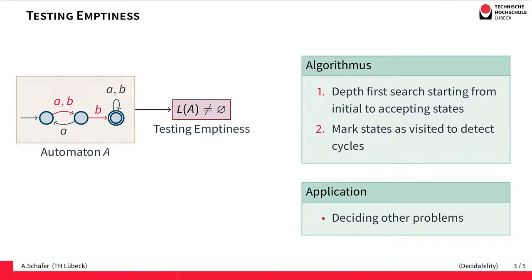Here in this automaton for example the accepting state here is reachable from an initial state by just following the path. So the language is apparently not empty.